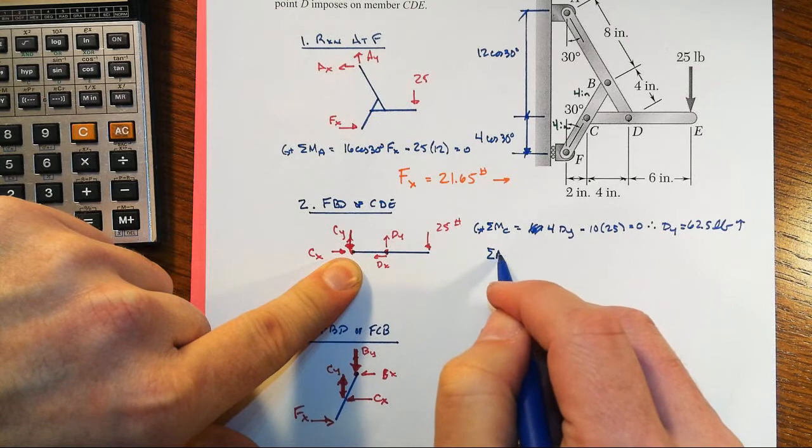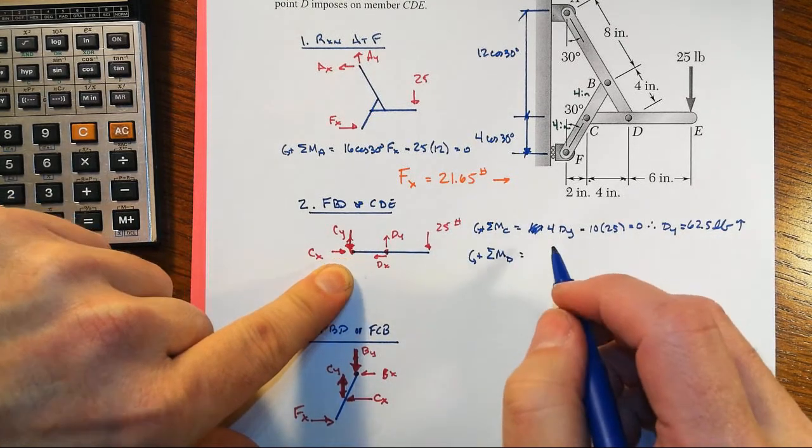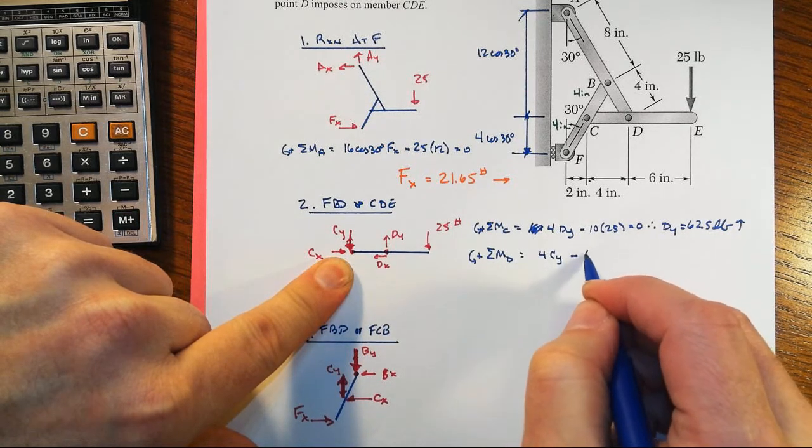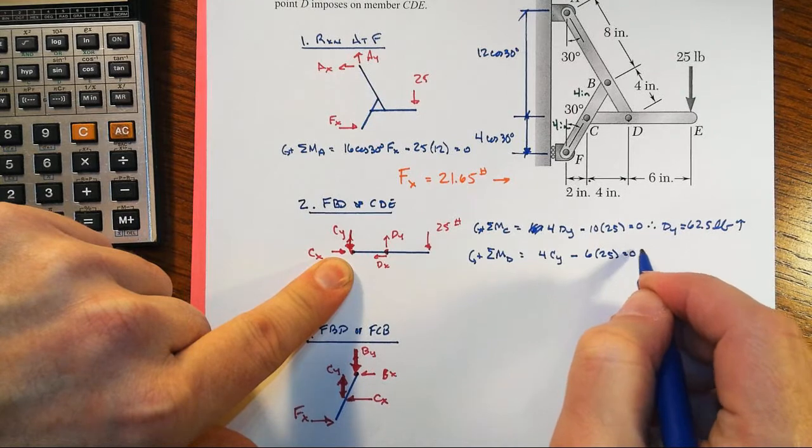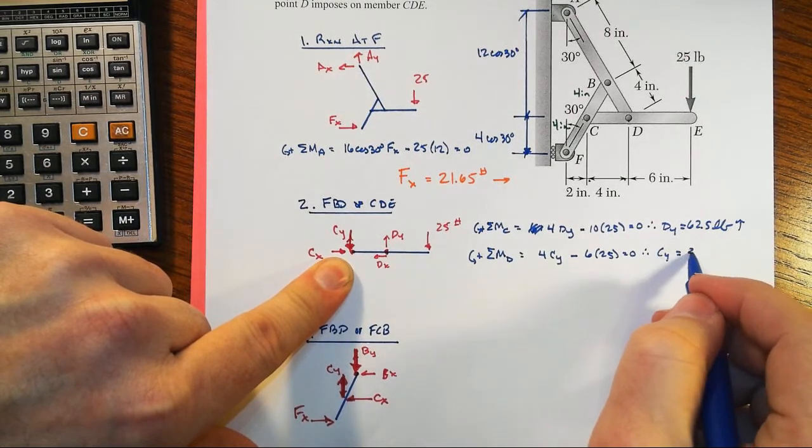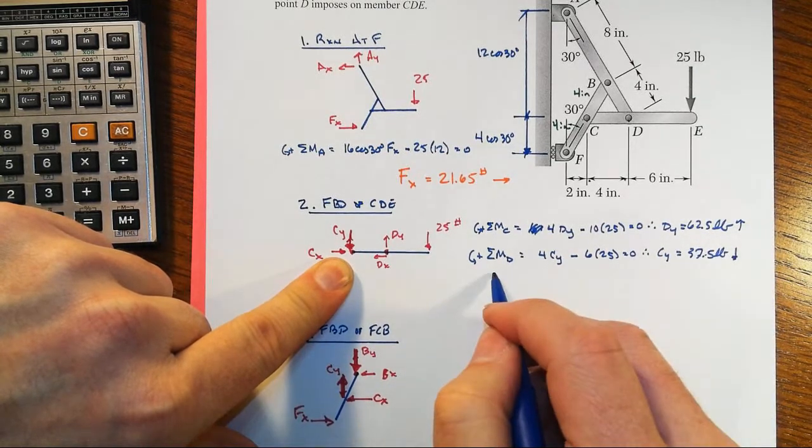Sum moments about D. Let's take counterclockwise as positive again. Now we have 4 times CY minus 6 times 25 equal to zero. Therefore, CY equals 37.5 pounds.